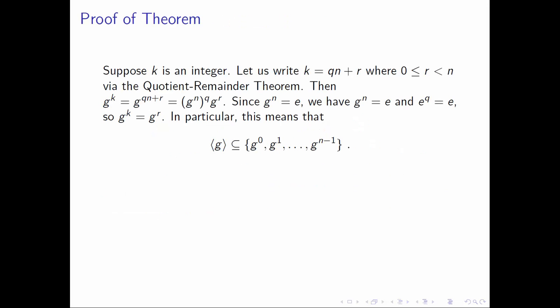Let's get started on the proof. Throughout this proof, we'll frequently want to take an integer and write it according to the quotient remainder theorem, where what we're dividing by is n — since n is the order of our element. So let's take an arbitrary integer k and write it as qn + r according to the quotient remainder theorem. What will be important is the specification on the range of r: r is greater than or equal to 0 but strictly less than n.